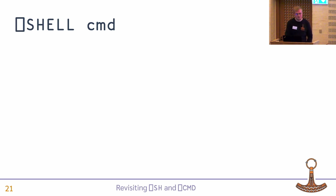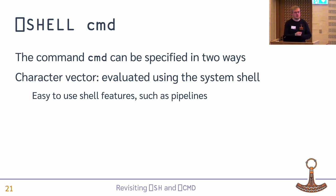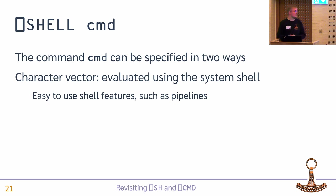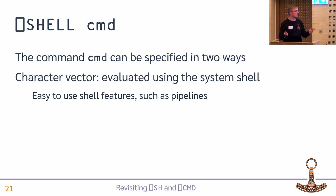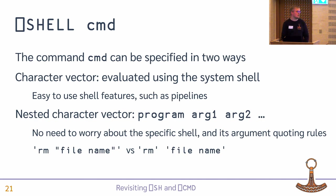The command itself can be specified in two ways. Like in Quad-SH, it can be a character vector and that will be evaluated using the system shell — easy to use shell features such as pipelines. But it has one annoyance: arguments to programs sometimes need to be quoted. So if you want to remove a file that has a space in it, you need to put quotes around it according to shell quoting rules. It might be nice to be able to specify it as a nested character vector, where the first element is 'rm' and the next is the filename, so you don't need to worry about shell quoting.